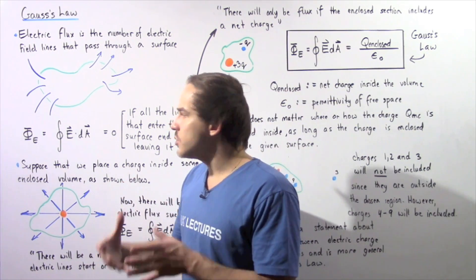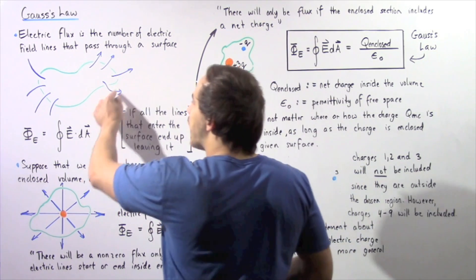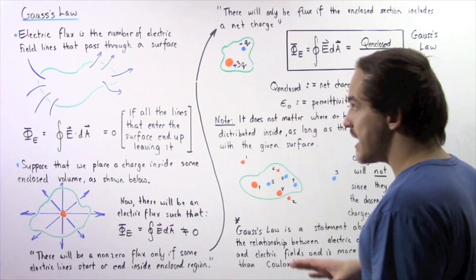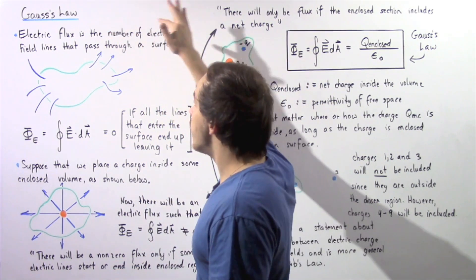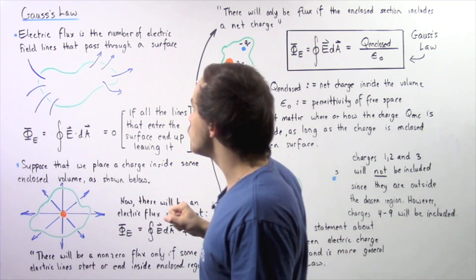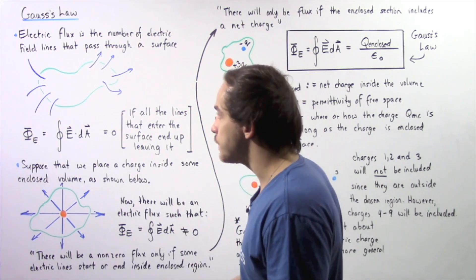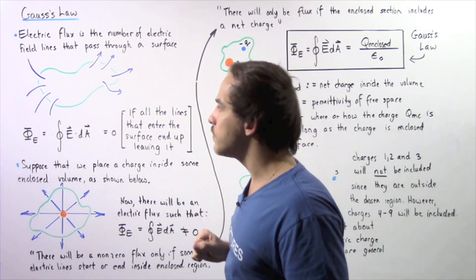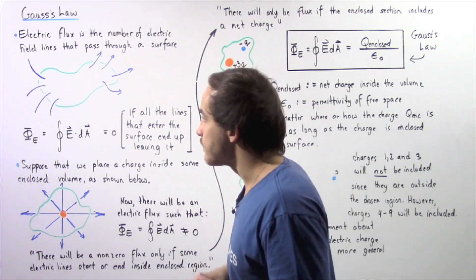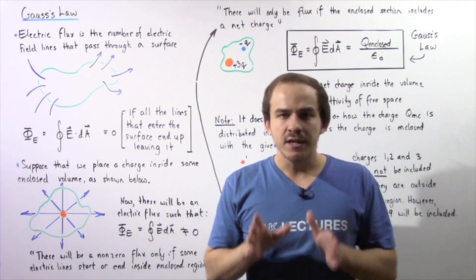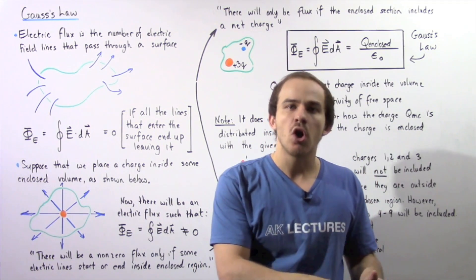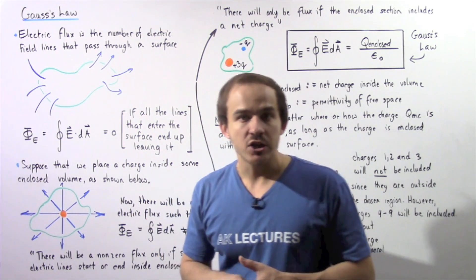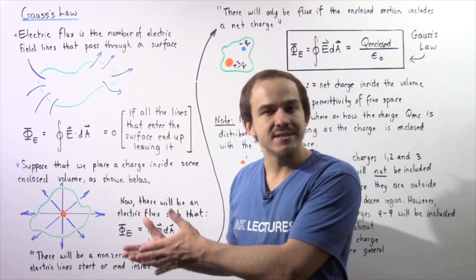Let's suppose we have a three-dimensional region of space outlined by the green section. This is our enclosed volume with a certain surface area. We define electric flux as the number of electric field lines, shown by the blue arrows, that pass through this surface. Notice that all the field lines that enter our surface exit at some other point, because by definition electric field lines must begin on a positive charge and end on a negative charge.